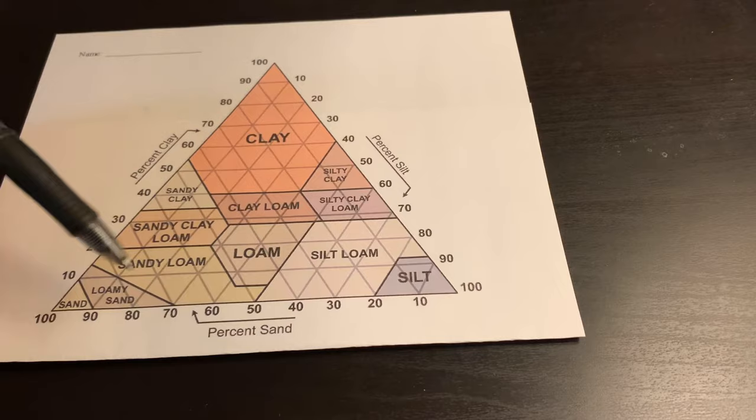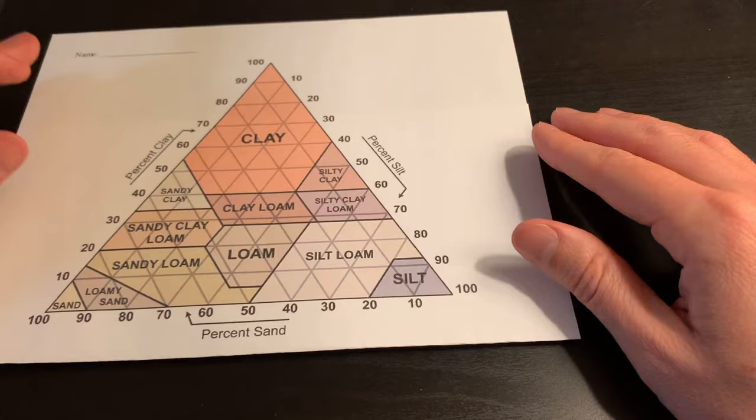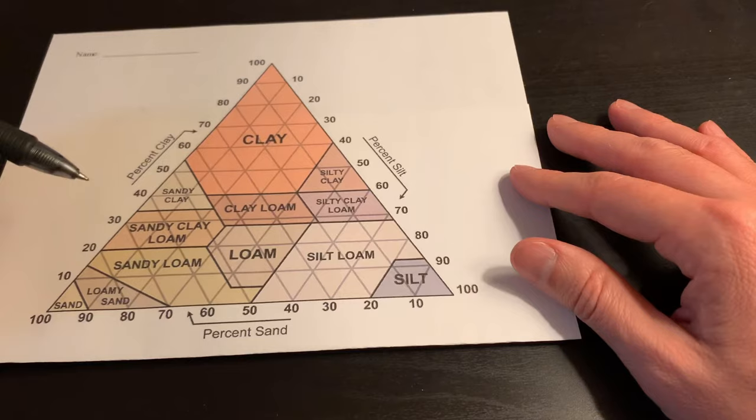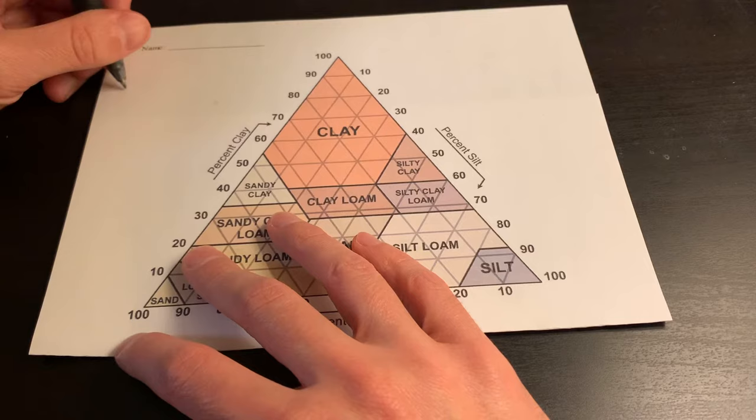It can be a little bit tricky to read this because we've got numbers zero to 100, zero to 100, and zero to 100 on all three sides. And so when you find out what percentage of each of these soil separates you have, you need to make sure you're reading it the right way.